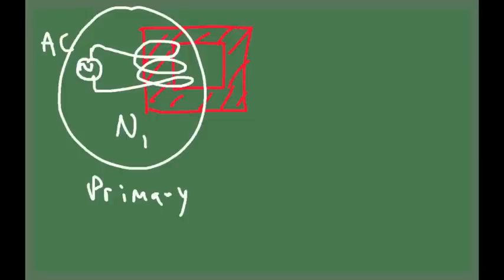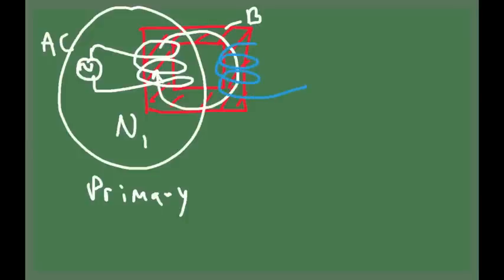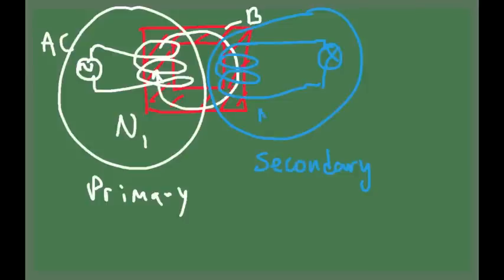You have a current that is changing with time, so a magnetic field is induced inside the core that changes with time. That magnetic field flows around the core — that's the magnetic field of the transformer. Then on the right-hand side, you have another coil. You wrap around some more wire — this is going to be the output, the secondary circuit. This one has a number of turns, say N2, on that side of the transformer.